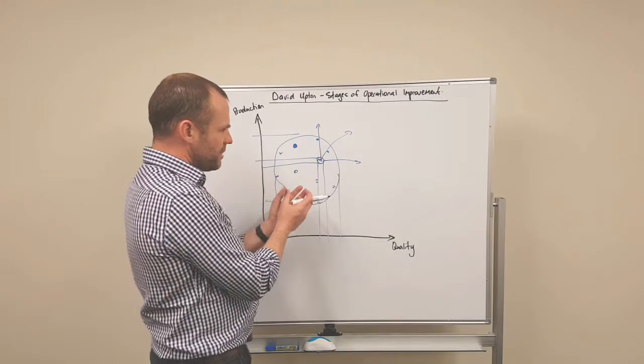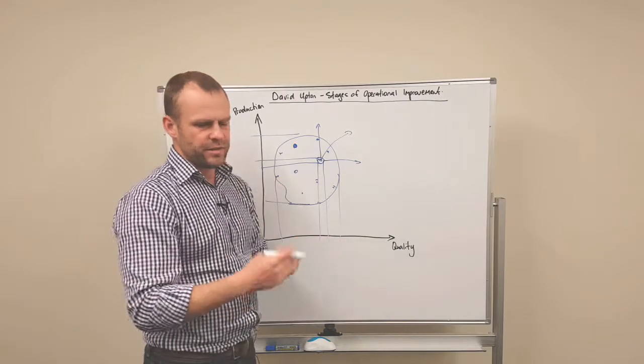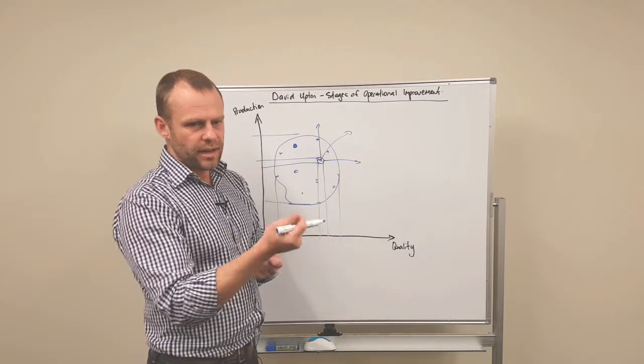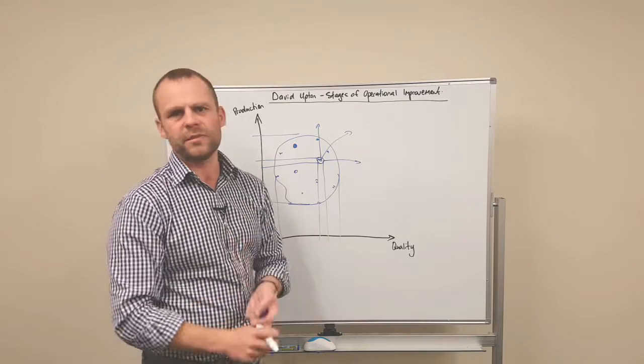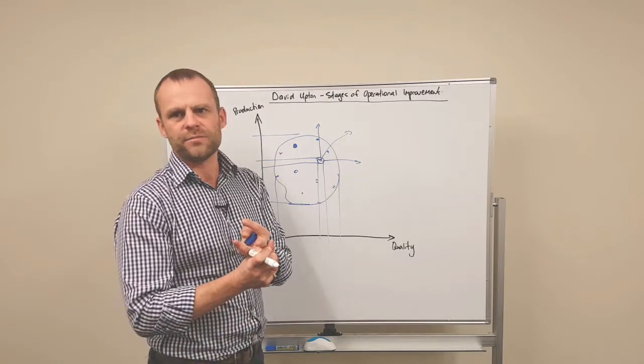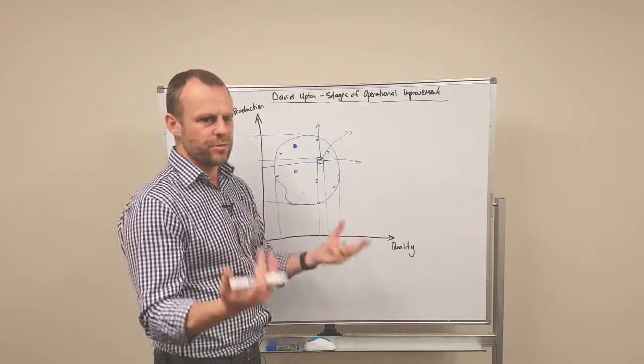Now, because you've got control, you can start to do experiments, you can start to turn the dial up, you can do a design of experiments exercise, you can do some lean and some six sigma and those kind of things to reduce waste.